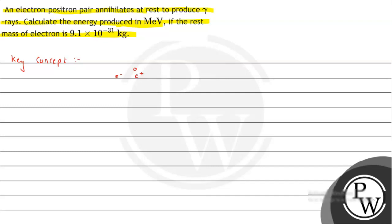So both the positron and electron, they destroy completely and give rise to gamma rays. This is what has been given to us. Now here we need to understand about the concept of rest mass energy.